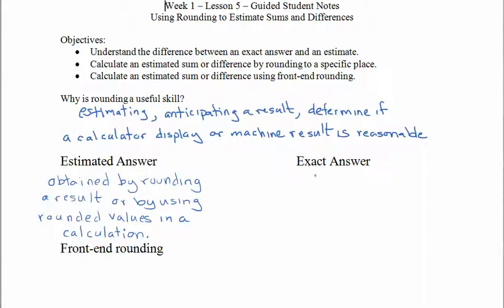An exact answer is when neither the original values nor the result are rounded.